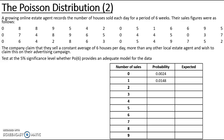Continuing with lambda=6, the probabilities are: 0.0148 for x=1, 0.0446 for x=2, 0.0892 for x=3, 0.1338 for x=4, 0.1606 for x=5, 0.1606 for x=6, and 0.1376 for x=7, and 0.1032 for x=8.